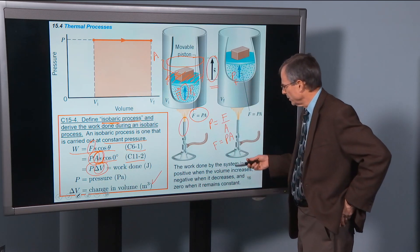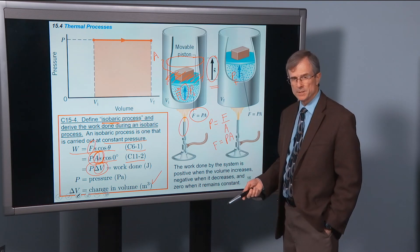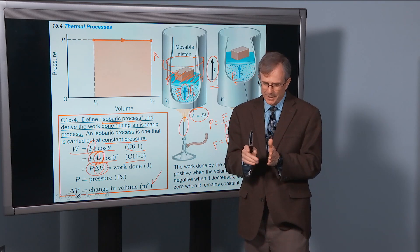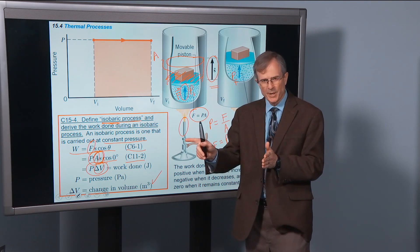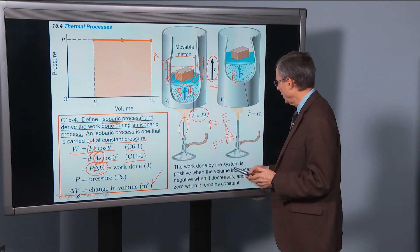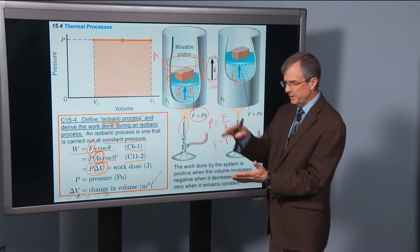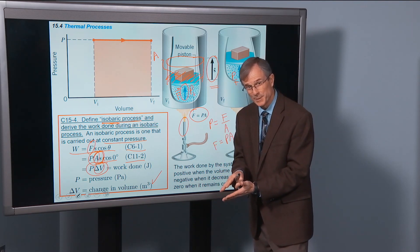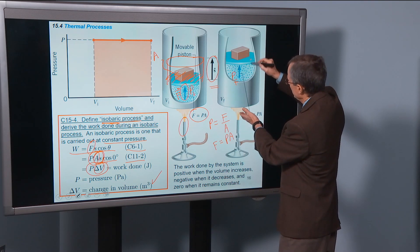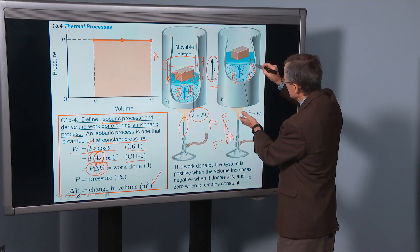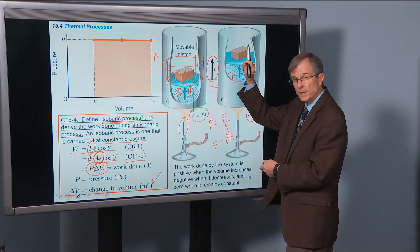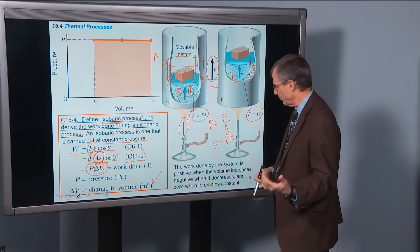The work done by the system is positive when the volume increases — analogous to a force in the direction of displacement. It's negative when the volume decreases, where the gas force is upward but the displacement is downward, giving negative work. The work done is zero when the volume remains constant.